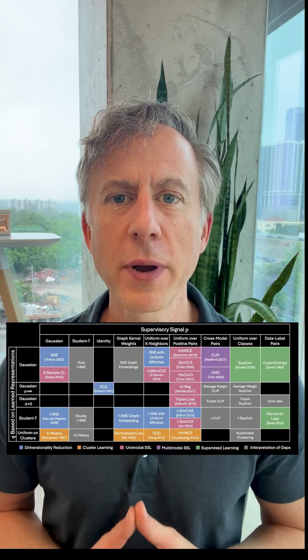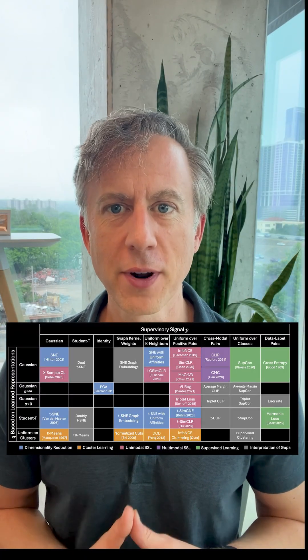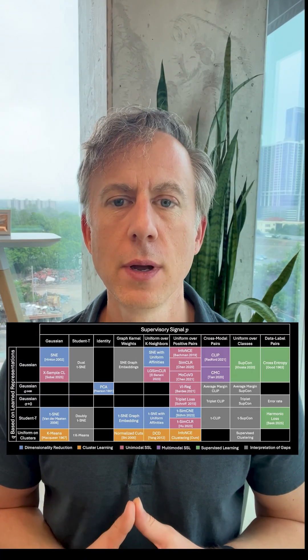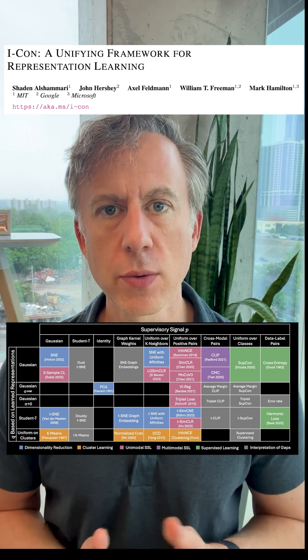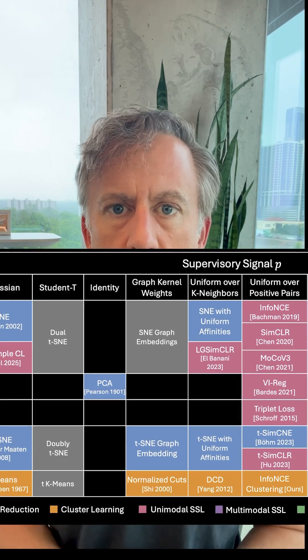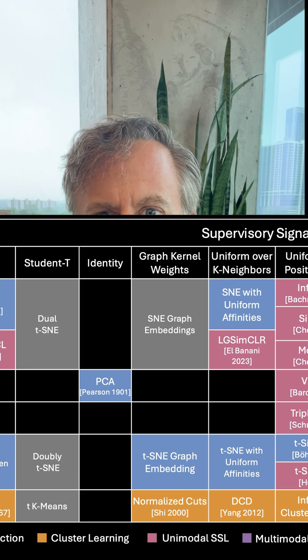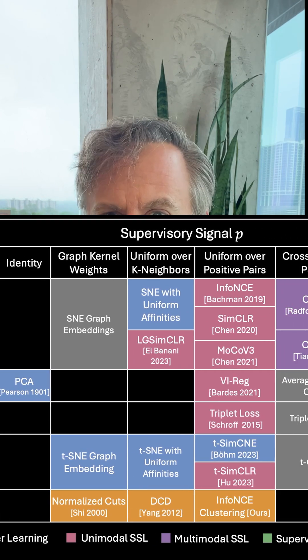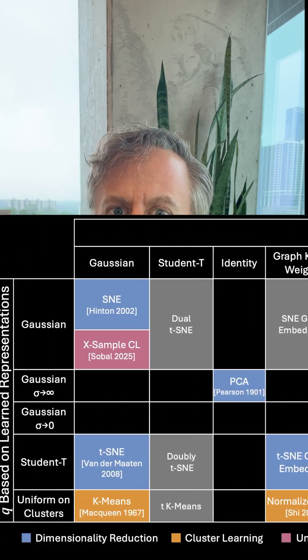What if I told you there's a periodic table for machine learning algorithms? A new paper from MIT, Microsoft, and Google Research takes over 20 seemingly different methods — from classics like PCA and K-means to modern techniques — and organizes them into one coherent picture. So what is that connection?